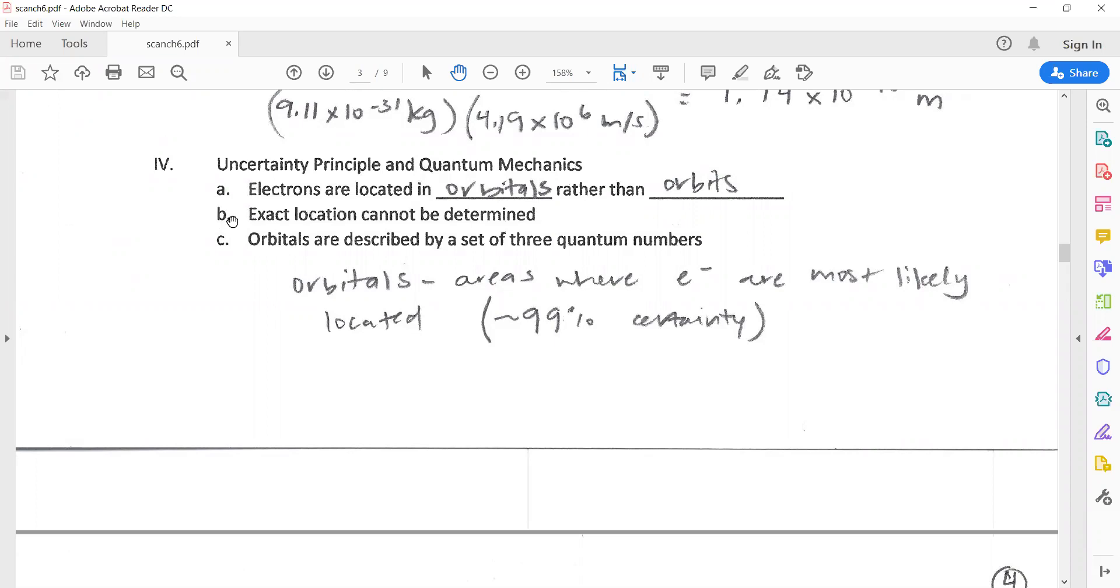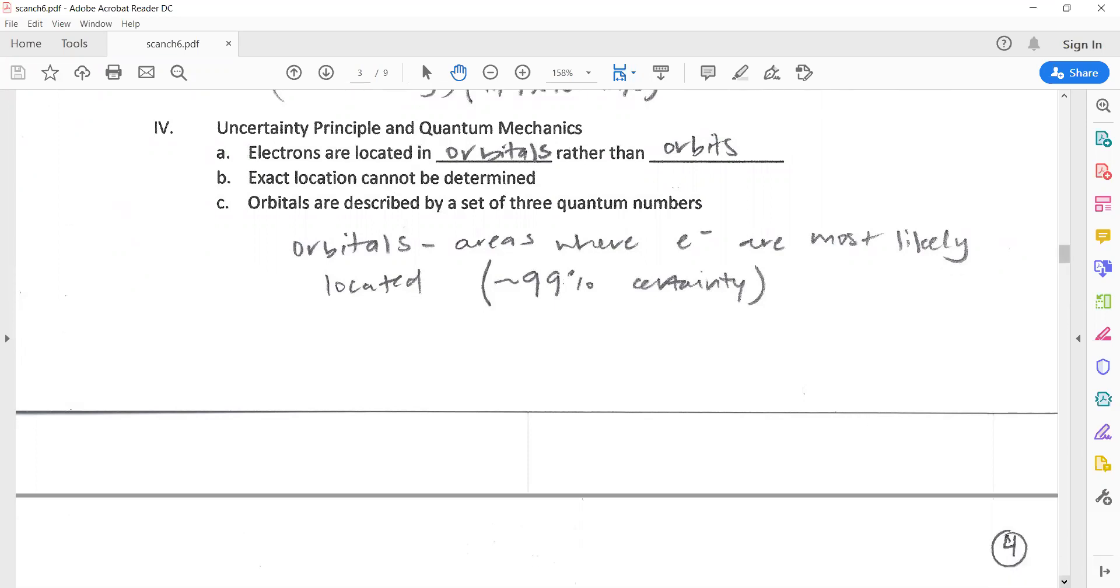There's an uncertainty principle which tells us that we cannot determine the exact location of an electron. We can just guess it very well, get it right 99% of the time, but we can't definitely locate it because it's not stuck in a specific spot. We can describe orbitals using three quantum numbers to define or describe these orbitals. Where are they? What size are they? What do they look like? What shape are they?